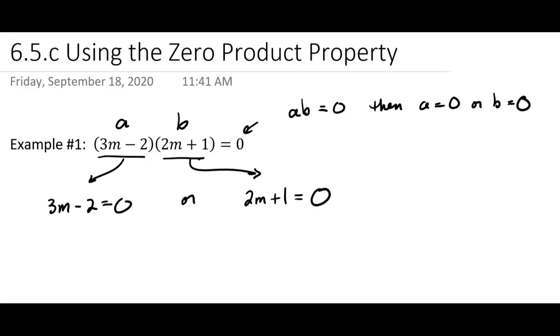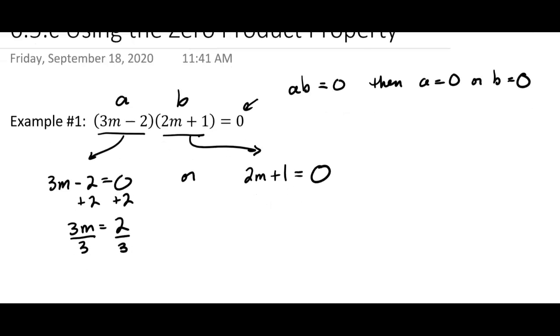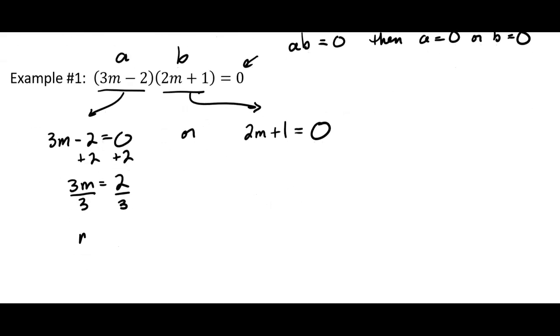They're really just linear equations, but we know how to solve a linear equation. Add two to both sides, 3m equals 2, divide by 3, and so m could be two-thirds. That's one solution.